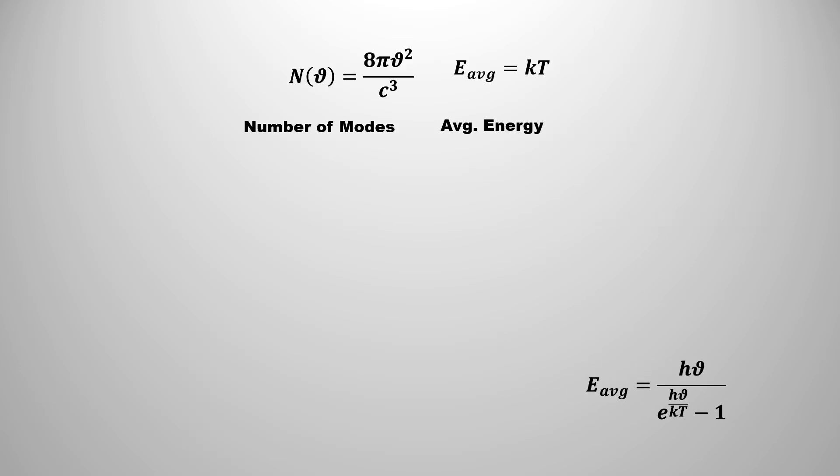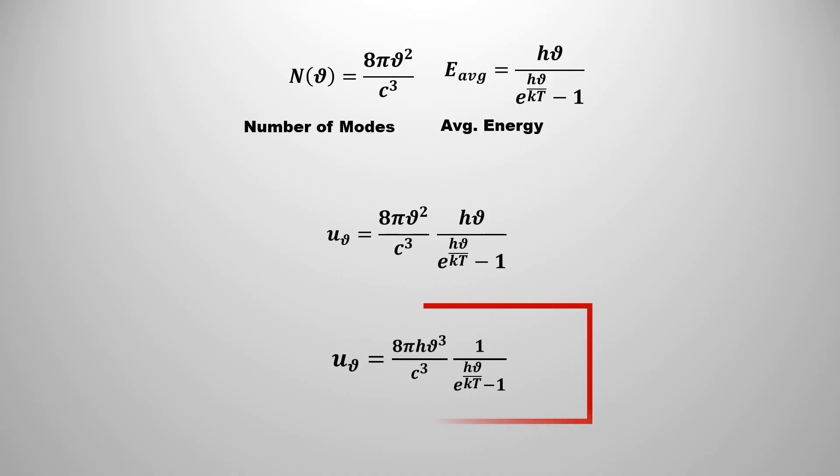When Planck replaced the average energy of Raleigh's law with this, he got a new equation for energy density. This equation of average energy is bit more complicated than the Raleigh's law. According to this, the average energy not only is proportional to the frequency to the power q but also has an exponential term of frequency. This equation is named as Planck radiation law.